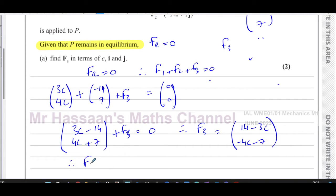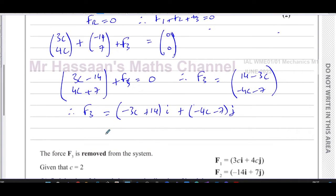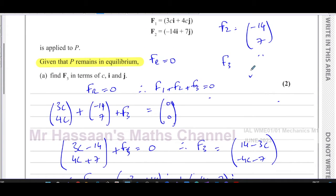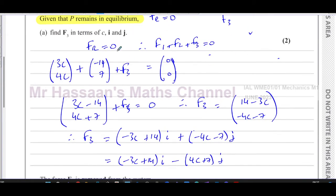We can therefore say F3 is going to be minus 3c plus 14i plus minus 4c minus 7j. We can leave it like that. Or we can write minus 3c plus 14i and minus 4c plus 7j like that if you want. Both of them are fine. That's F3 in terms of c, i and j.